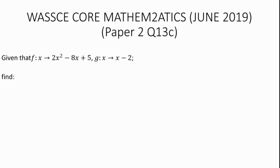Given that f(x) equals 2x squared minus 8x plus 5, and g(x) equals x minus 2, find: (i) f of minus 3, and (ii) the value of x such that f(x) equals g(x).